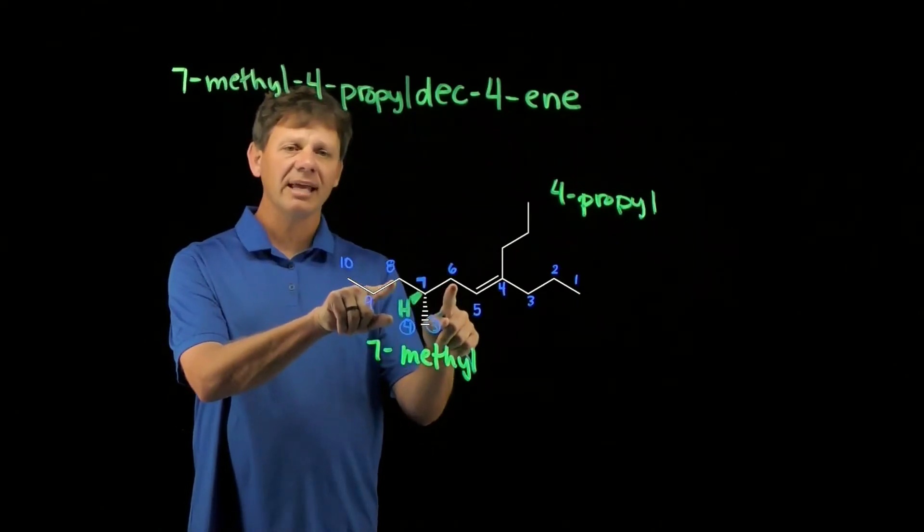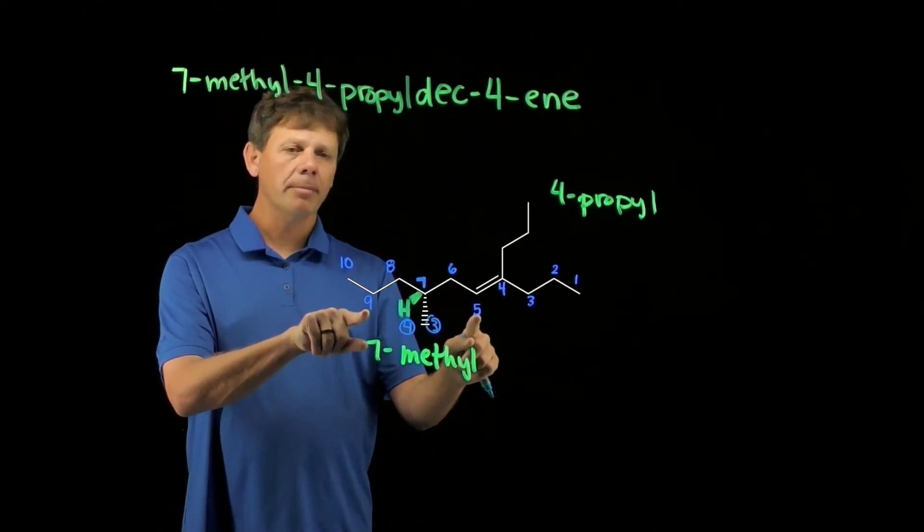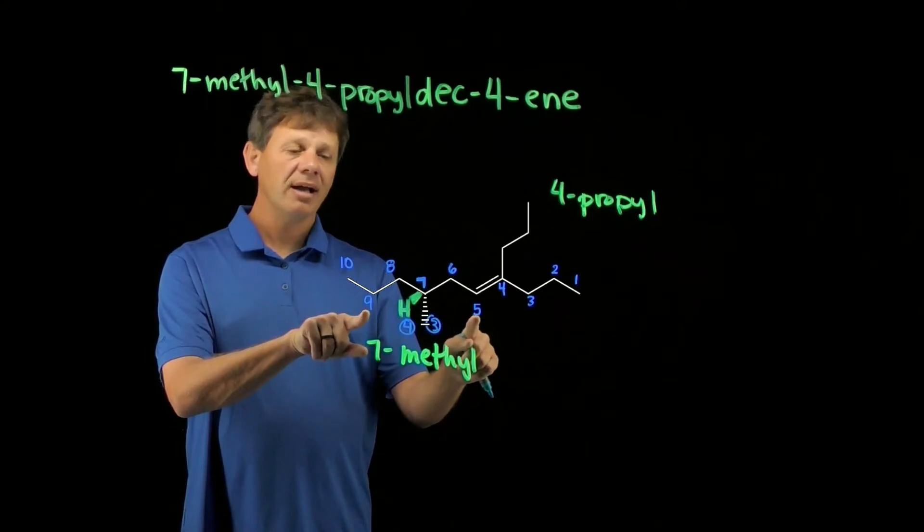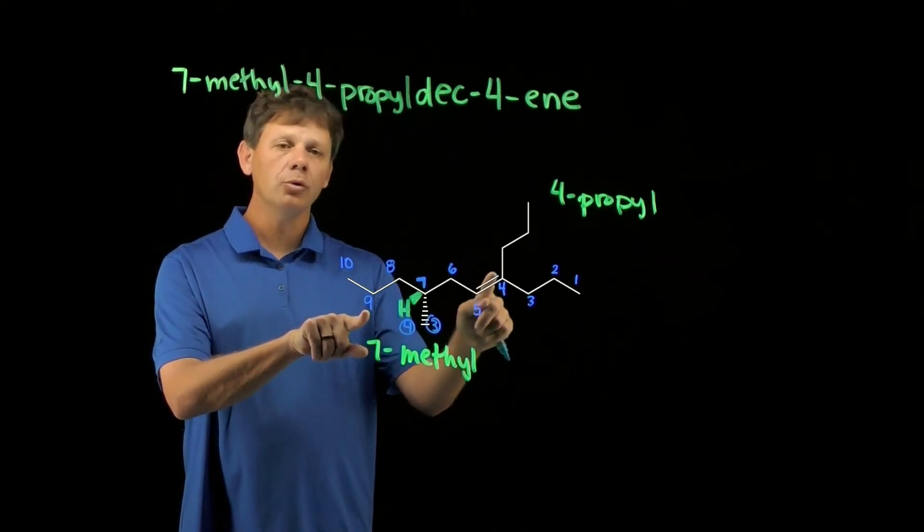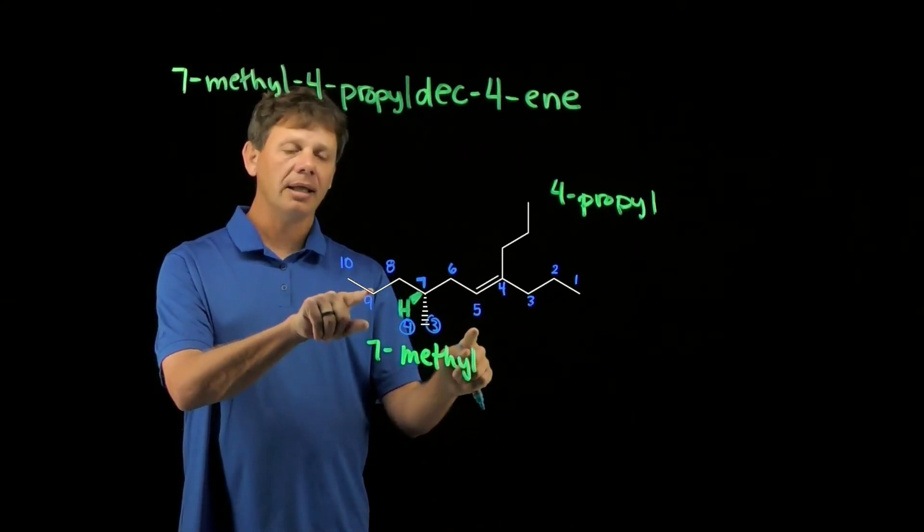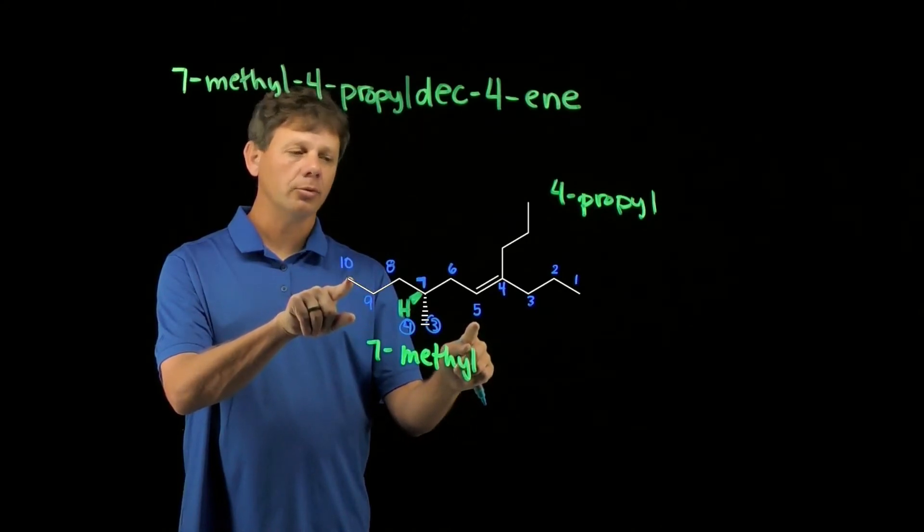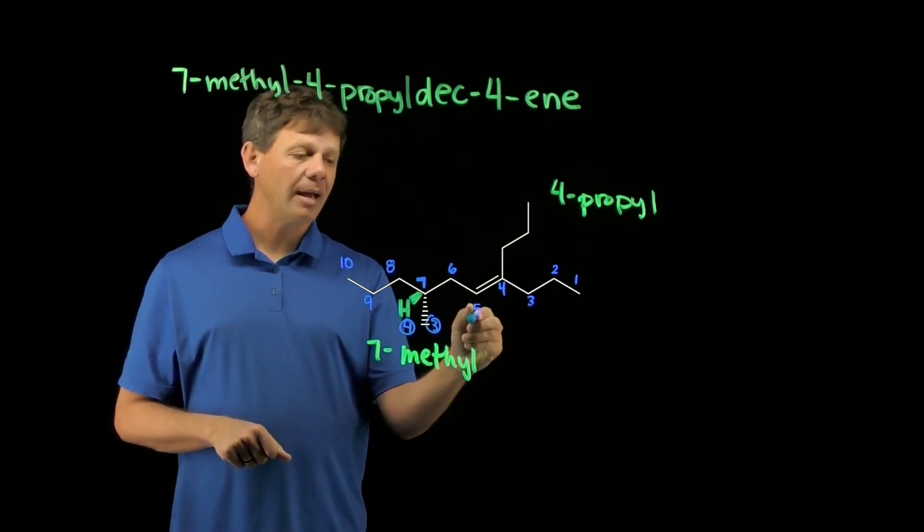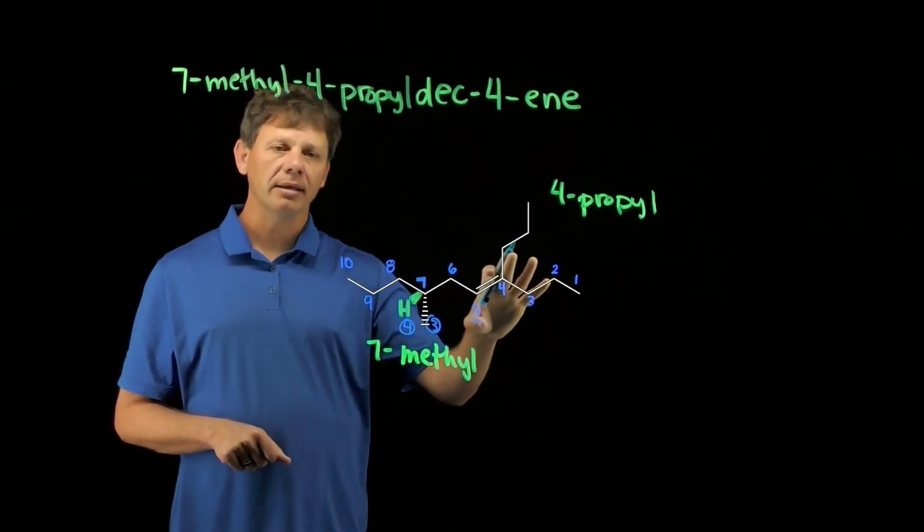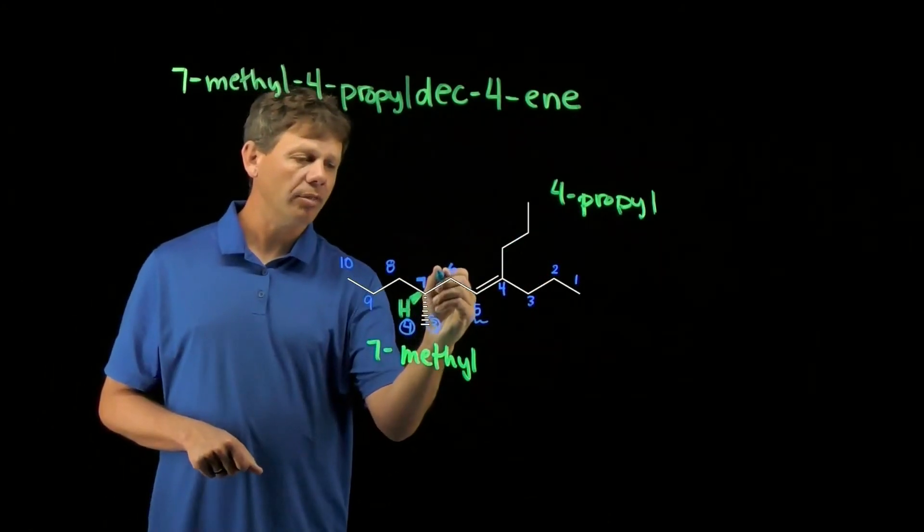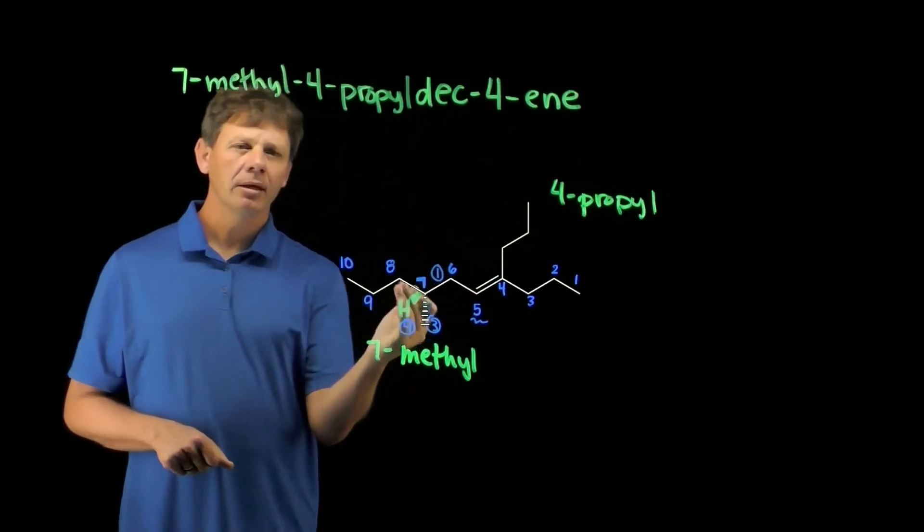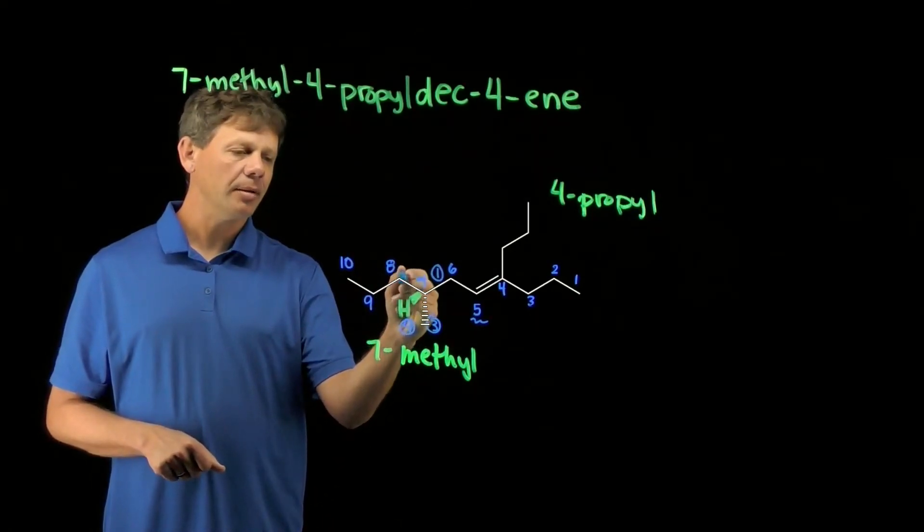Between six and eight, they're both CH2s. We go out one more to compare nine and five. Five is a carbon with two bonds to another carbon. Nine is a carbon with only one bond to a carbon. So because of what's happening at five, this side is going to win the tiebreaker. And so we'll call this the number one substituent. Going over to the left is the number two.